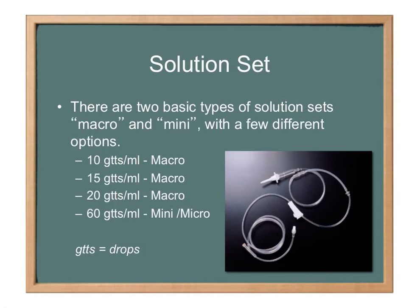There are a couple different types of solution sets, separated into macro and mini. You might hear a mini drip or a macro drip. The 10 drops, 15 drops, and 20 drops per mL are all types of macros. 60 drops per mL is a mini or micro. GTTS just stands for drops — whenever you see GTTS, that just means drops. Whenever you hear CC, that is the same thing as mL.